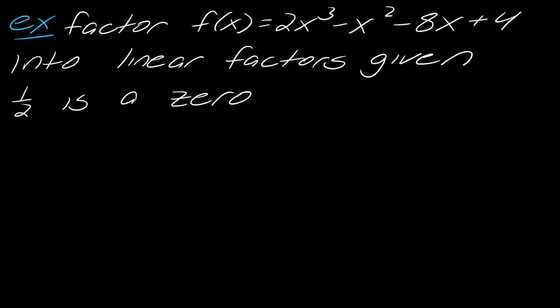Alright, so, let's try this again. So, I've got another one, 2x cubed minus x squared minus 8x plus 4. So, we want to factor that into linear factors given that 1 half is a 0. Now, you know me, I say math is not a spectator sport. So, I think that you should pause the video here, give this a try, and hit play when you're ready. Alright, so, I know 1 half is a 0.